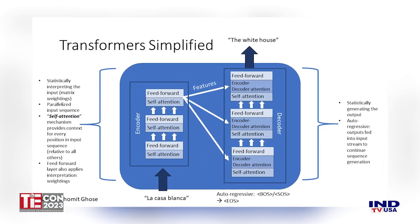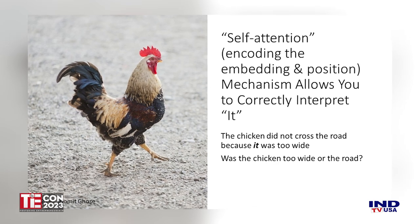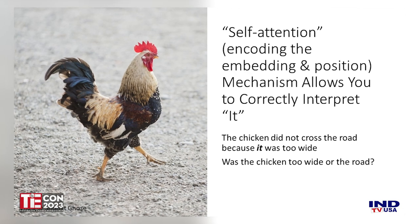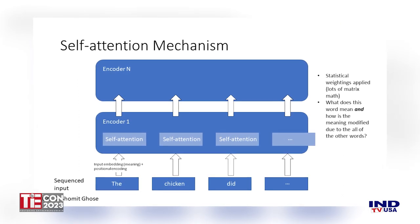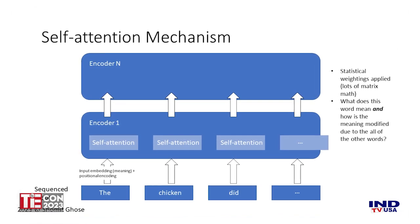What really makes the transformer fly is the self-attention mechanism. Here's self-attention at work: 'The chicken did not cross the road because it was too wide.' What was too wide — the chicken or the road? We all know it was the road. Historically, this has been a difficult thing for natural language processing to figure out. The transformer actually solved this. Self-attention refers to a statistical mechanism that interprets each word in the input sequence and modifies that meaning based on all the other words in the input sequence. Works really well in language, and it turns out it works really well in industry too.